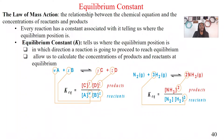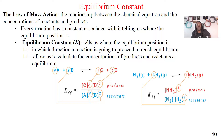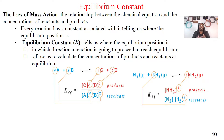The law of mass action — this is the first thing we have to talk about before we get into the equilibrium constant. So law of mass action is basically going to show us a relationship between our chemical equation and the concentrations of our products and reactants. That's basically what law of mass action is, just showing this relationship between the two.